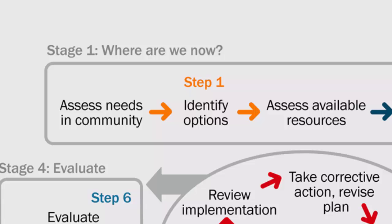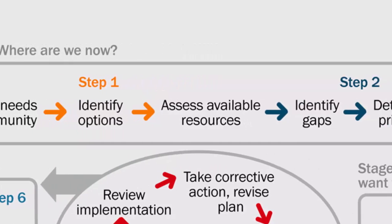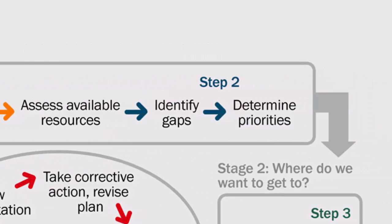In step one, we assess the needs in the community, identify the relevant strategies for primary, secondary and tertiary prevention, and assess the resources already available at each level of delivery. In step two, we identify the gaps in current provision and determine the priorities for action.